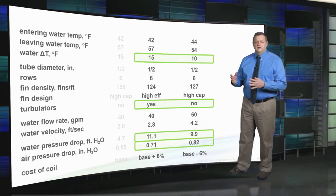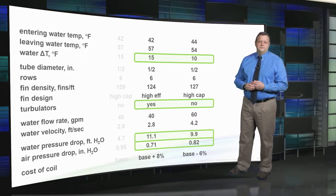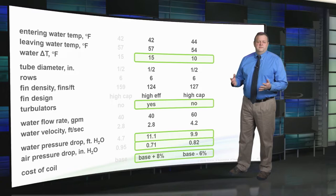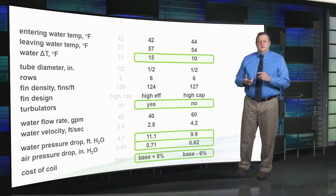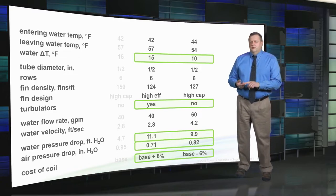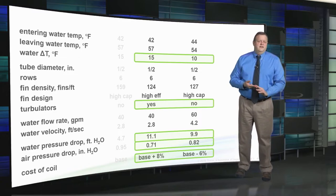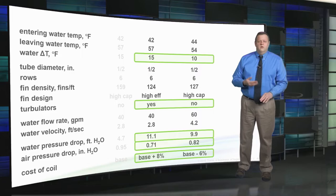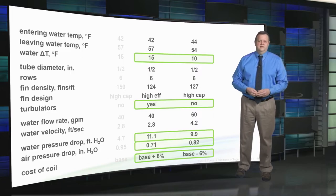To achieve the 15 degree delta T, some designers may select the coil with more fins — for this example, fin density increases from 127 to 159 fins per foot. This increases air pressure drop from 0.82 to 0.95 inches and increases the cost of the coil. Alternatively, selecting a coil with turbulators increases the water pressure drop from 9.9 to 11.1 feet but reduces air pressure drop since fewer fins are required. In summary, coils will likely be selected with more coil surface area, or we'll see an increase in the use of turbulators.